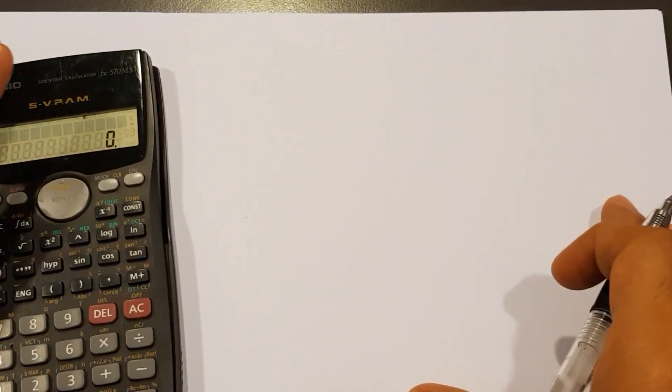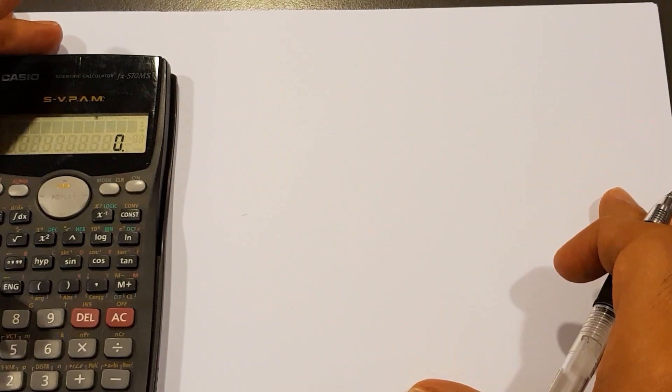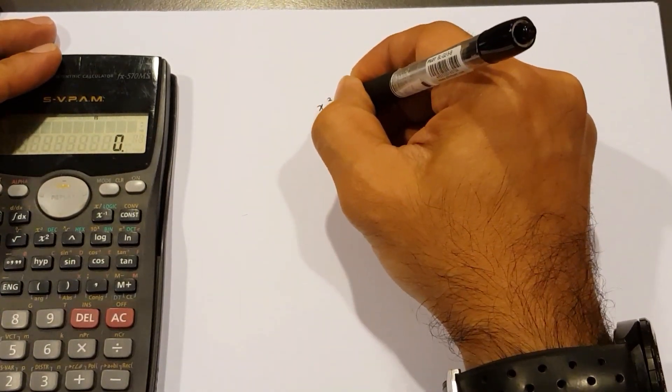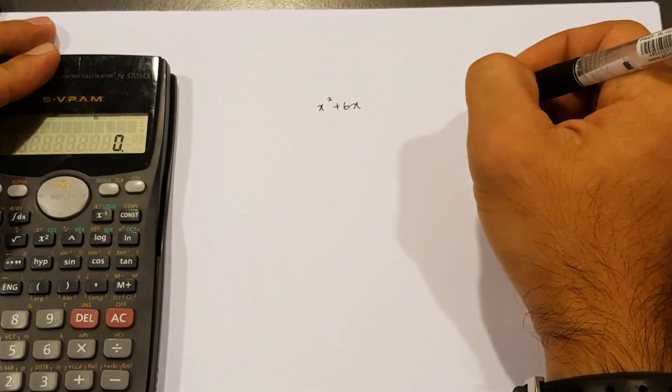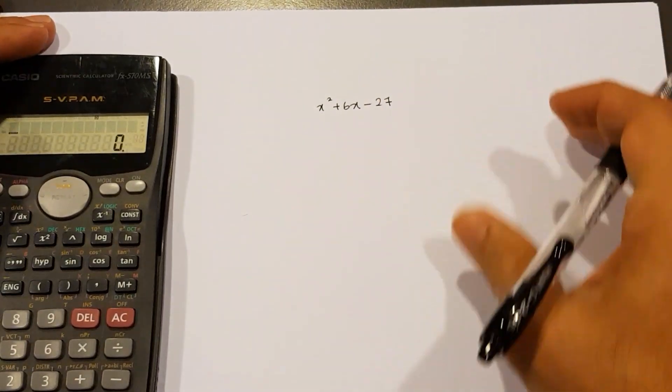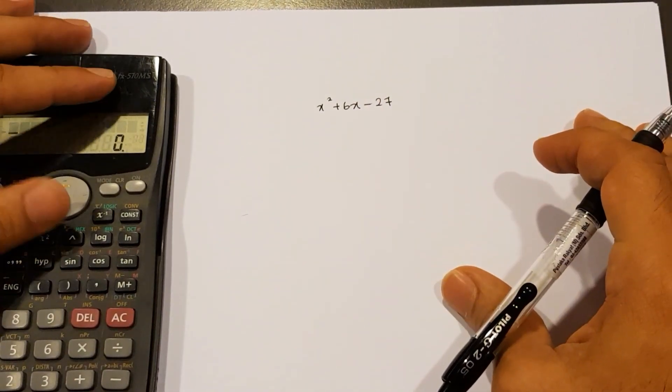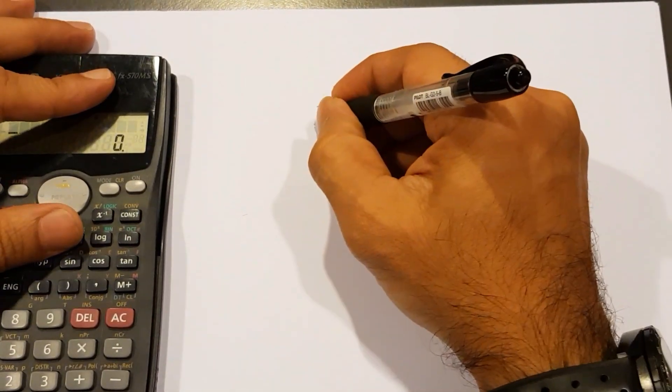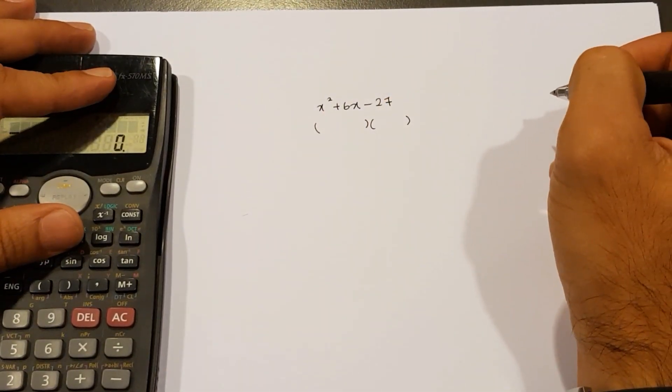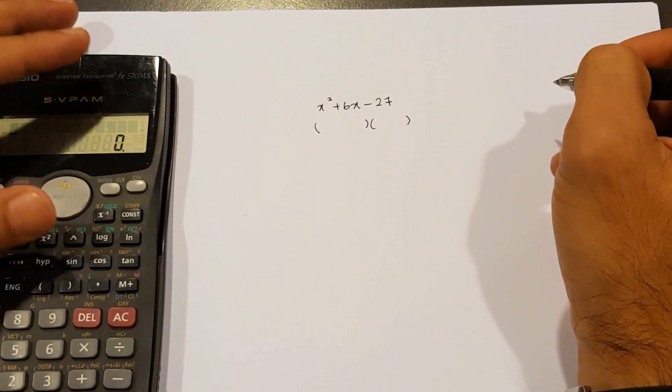Now, when we say factorization, I'm talking about say you're given x squared plus 6x and then minus 27. When we factorize, you'll expect to get two brackets. So how do we use the calculator to perform this factorization?